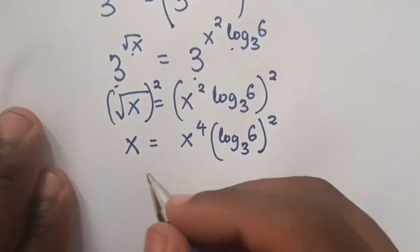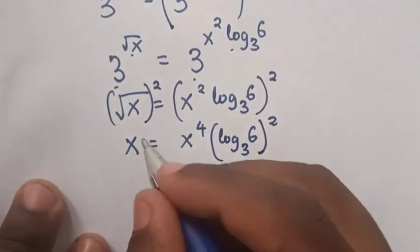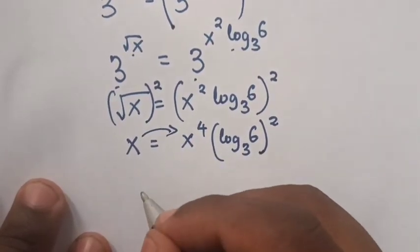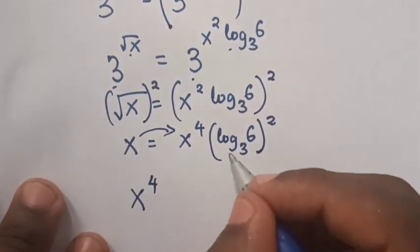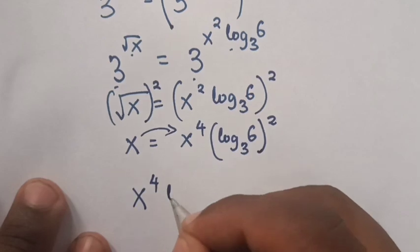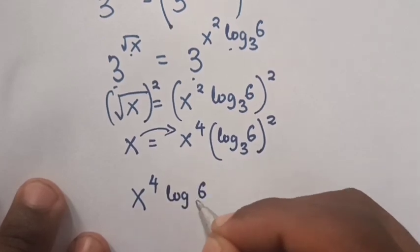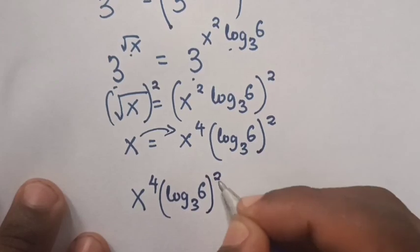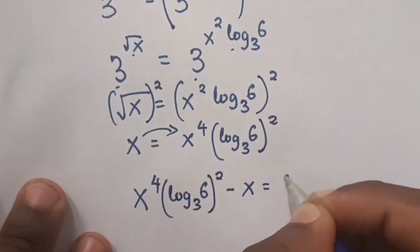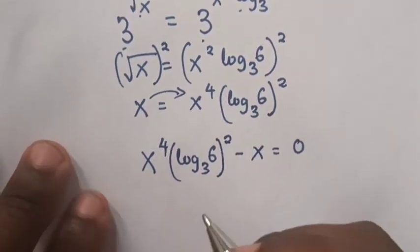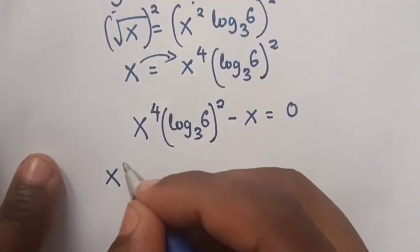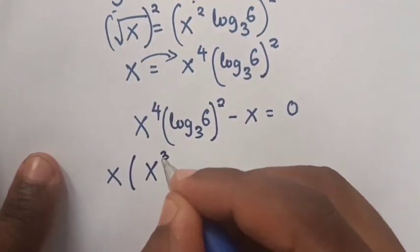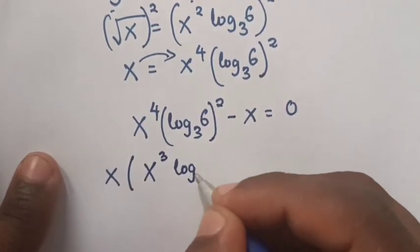Then we take x to the right side, so it will be x power 4 log 6 base 3 bracket squared minus x is equal to 0. Now x is common, so x out of bracket: x power 3 log 6 base 3 bracket squared minus 1 is equal to 0.